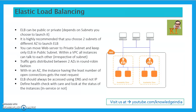ELB is a managed service from Amazon, so you do not have to worry about its scalability or high availability at all. It does two major things: first, it distributes incoming traffic to any number of instances registered to the ELB, and second, it does continuous health checks for those registered instances. If any instance becomes unhealthy and fails the health checks, ELB will stop sending traffic to that particular instance.